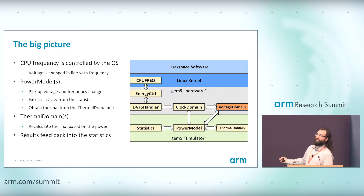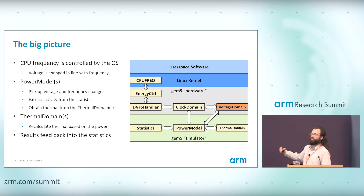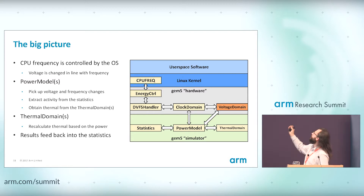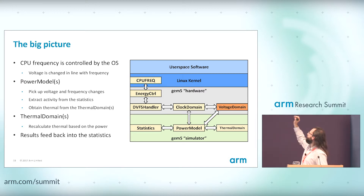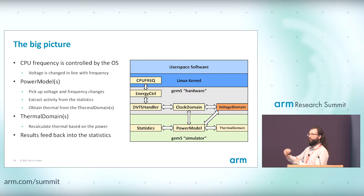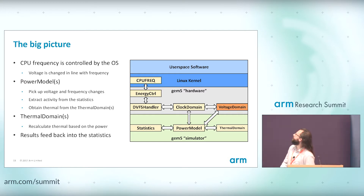In terms of the big picture, you have the CPU frequency framework in Linux controlling frequencies via the ngController and DVFS handler. The clock domains adjust the voltage via the voltage domains. The frequency and voltage outputs are fed into the power models along with GEM5 statistics, which then talk to the thermal model to calculate temperature. When you do a stats dump, all of this is written out to the statistics file, giving you your overall power output.